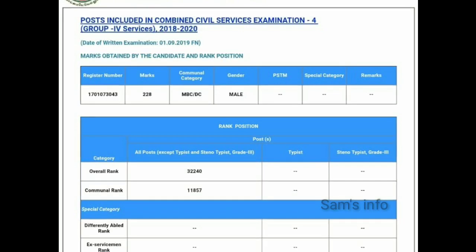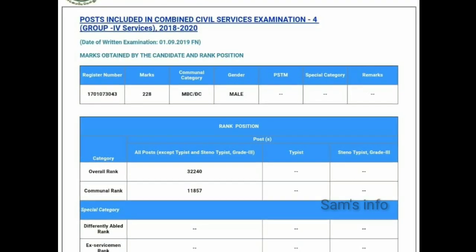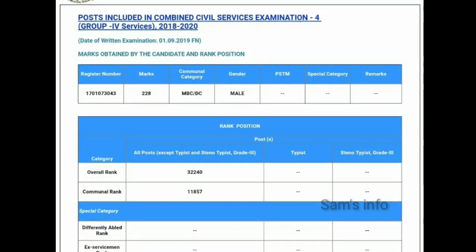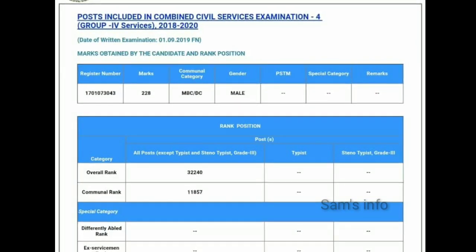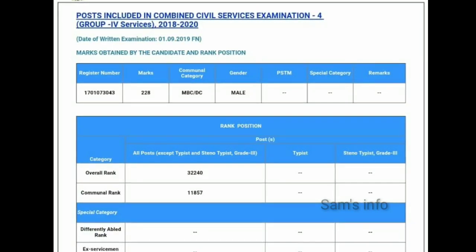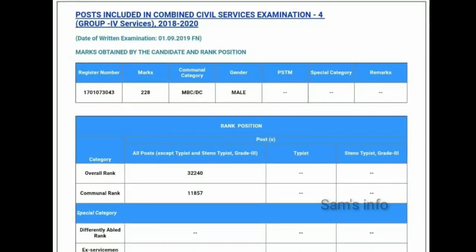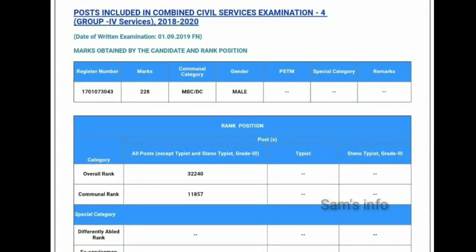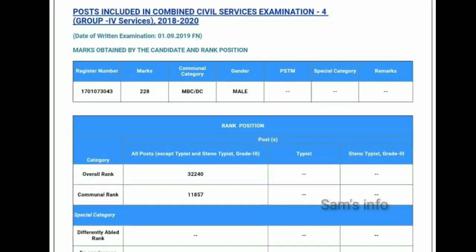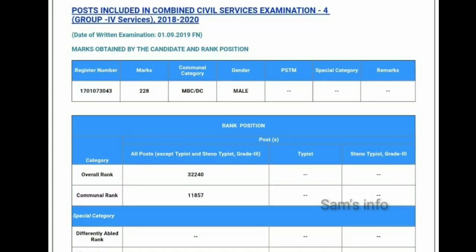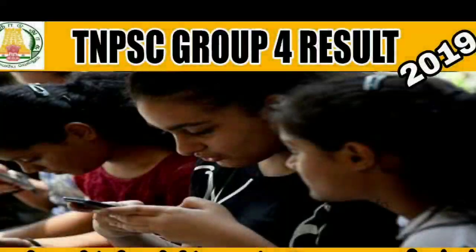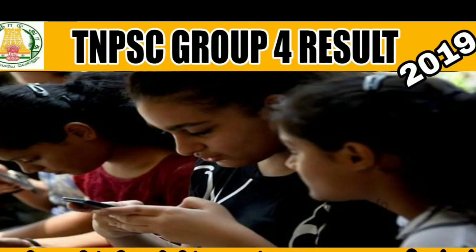You can find your rank based on the first mark in the MBC or BC caste. If you have a rank in the IRM, you can find your second rank within your community. Finally, if you have a reservation, a calculation is done based on community-based reservation in the normal examination.